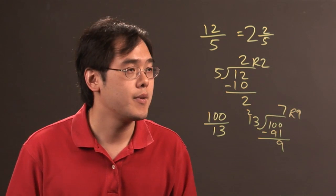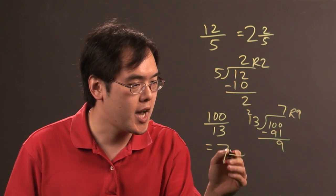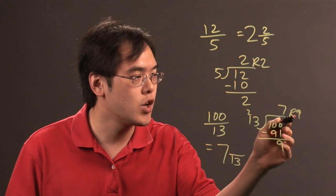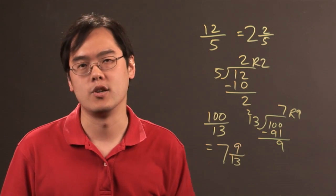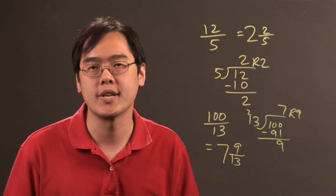Now to convert this to a mixed fraction, write the whole number down, keep the denominator as is, and then the numerator is always going to be the remainder. So I'm Jimmy Chang, and there's a couple examples on how to convert proportions into mixed fractions.